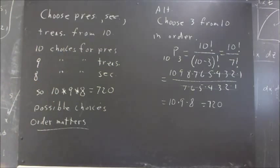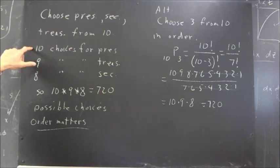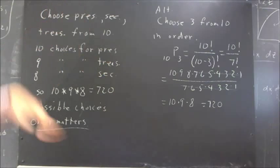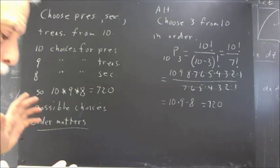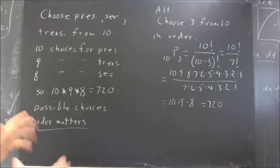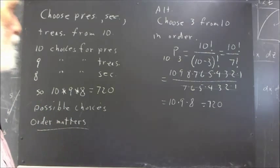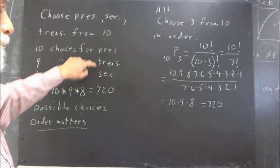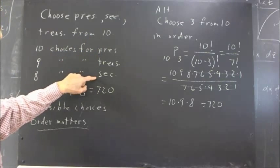Applying the fundamental counting principle, we see there are ten choices for the, let's say, we break this down into steps. And we could break it down where we choose the president first, the treasurer second, the secretary third.